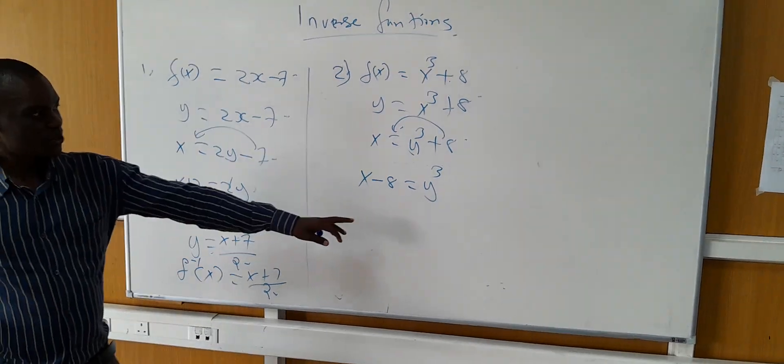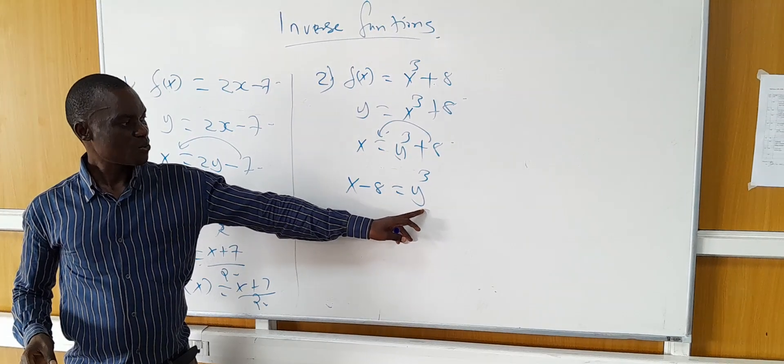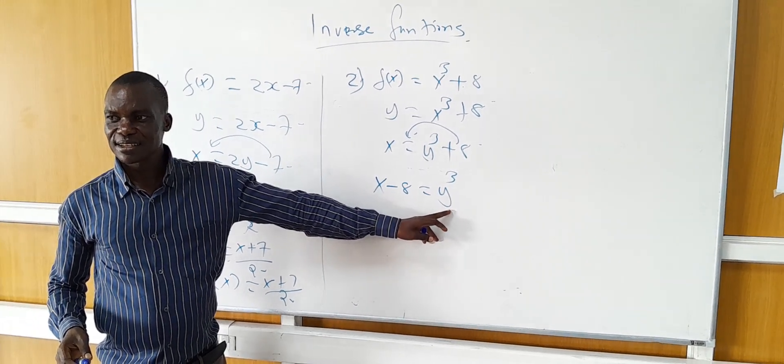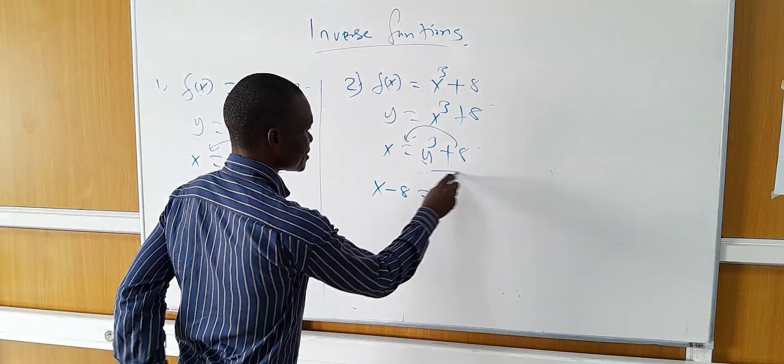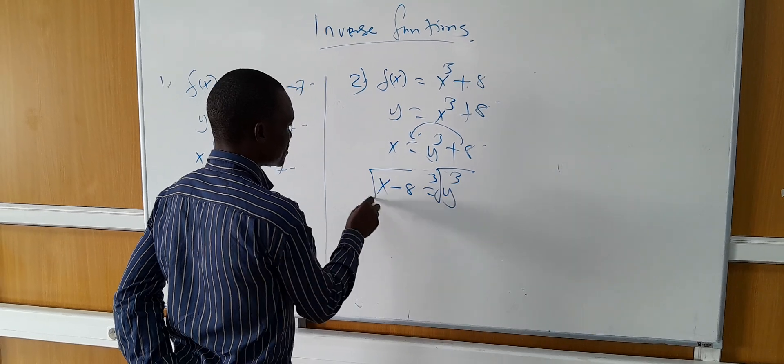Then what are we going to do to make sure that we have y on the right hand side? You take cube root on both sides.